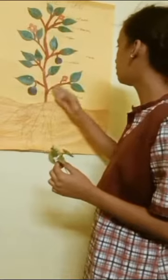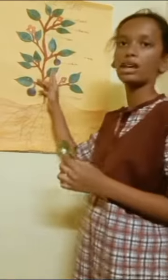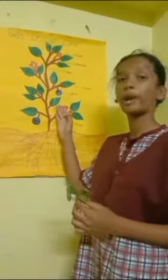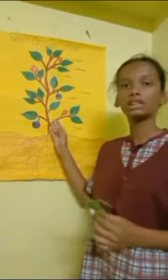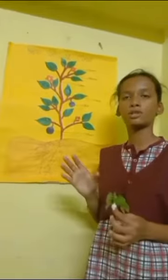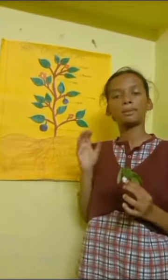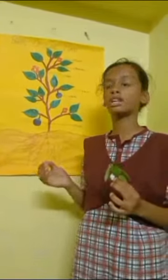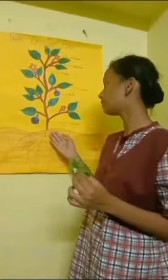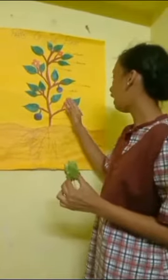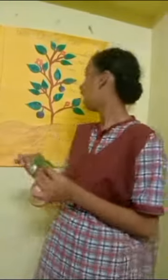The leaves are usually green due to the presence of chlorophyll. That chlorophyll helps to prepare the food, and that preparation of food is called photosynthesis. Leaves also have small openings called stomata.